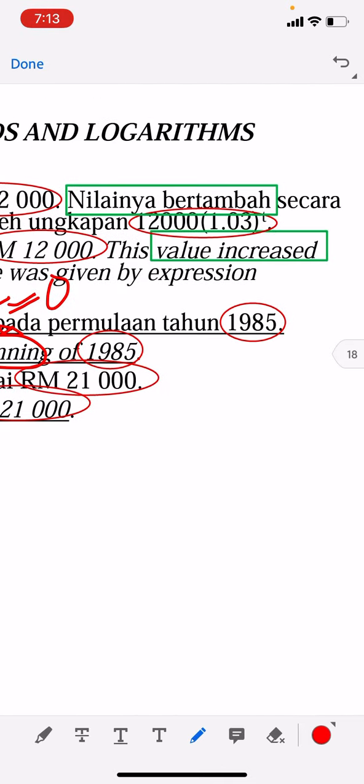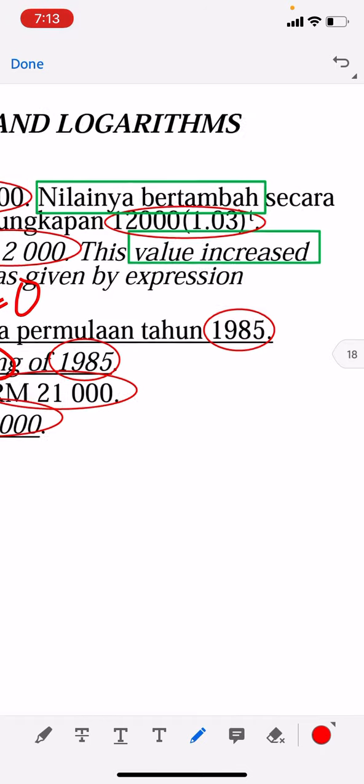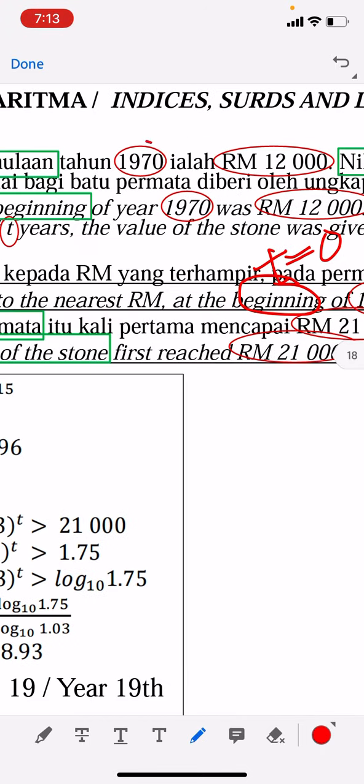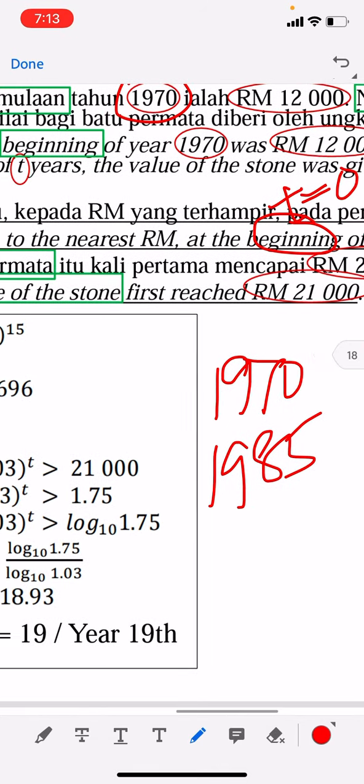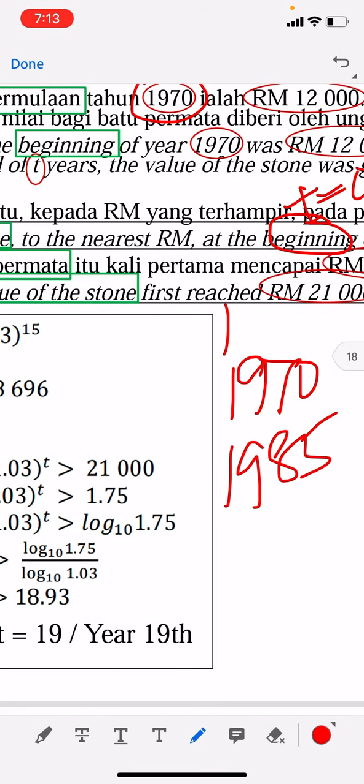If the time is at the beginning of 1985 - they say starting is 1970, but now they want 1985, so obviously there is a difference. If you take 1985 minus 1970, that is 15 years.